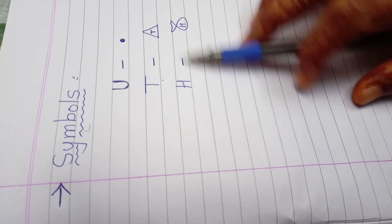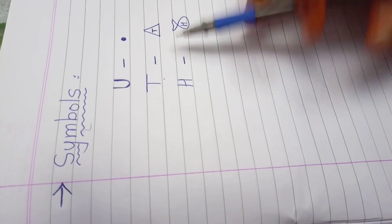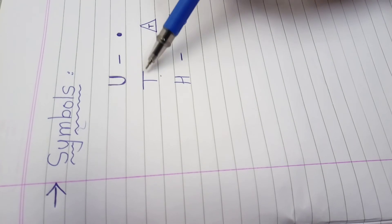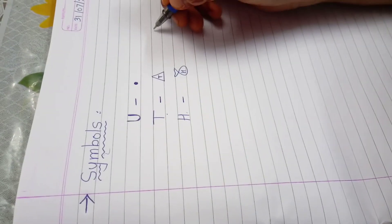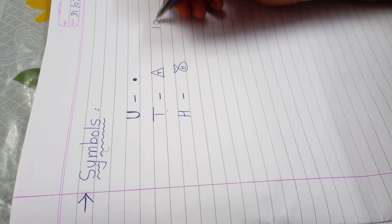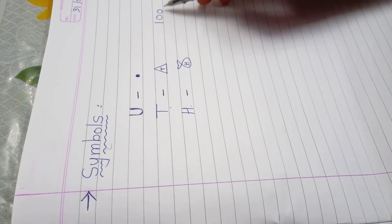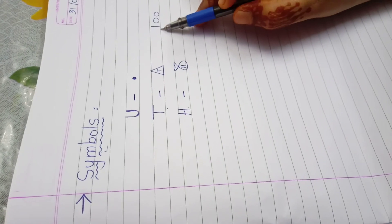So if the 3 digit number is there, then what is the place value? Unit, tens and 100. For example, see here, I am writing here 100. Okay. So for this, how many digits? 1, 2, 3. Okay.